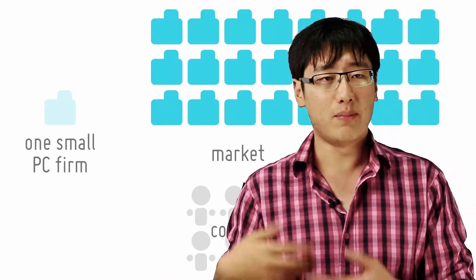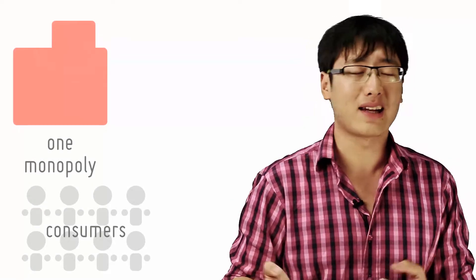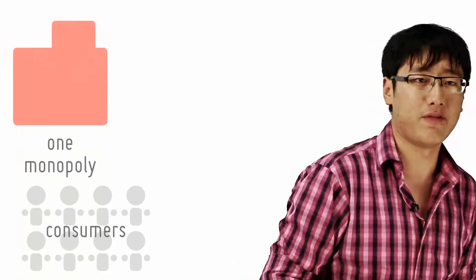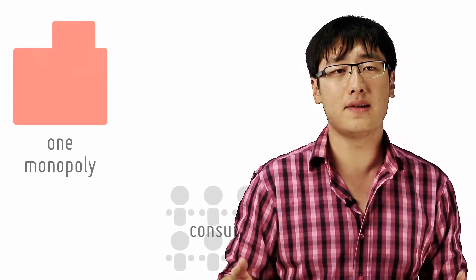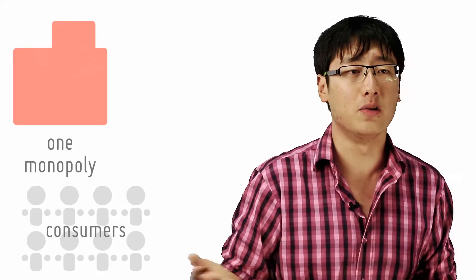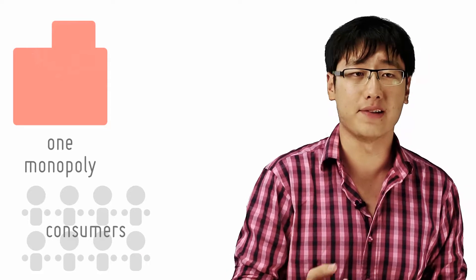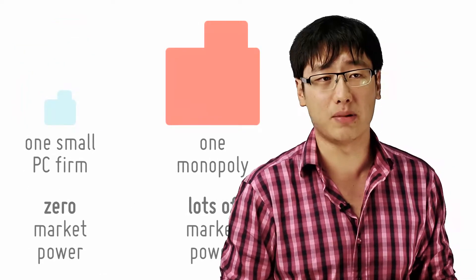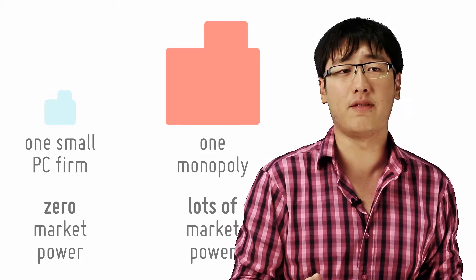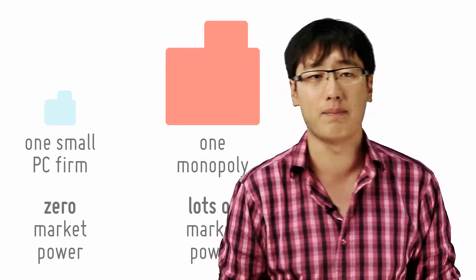But if you're a monopoly, you get to set your own price, unlike the perfectly competitive firm where you take the market price — because there isn't just a market dictating you. So market power refers to the amount of power you have over prices. Market power occurs when there is less competition, so perfectly competitive firms have zero market power, whereas monopolies have lots of market power.